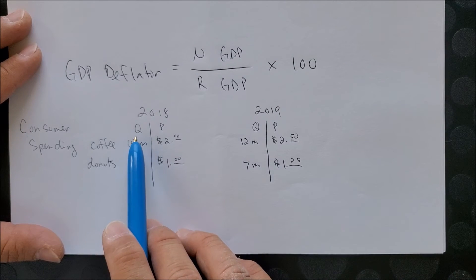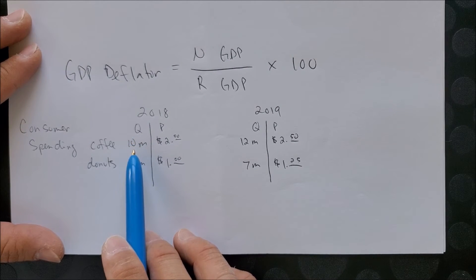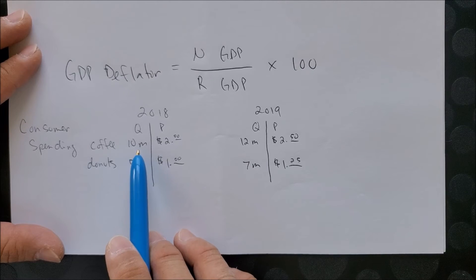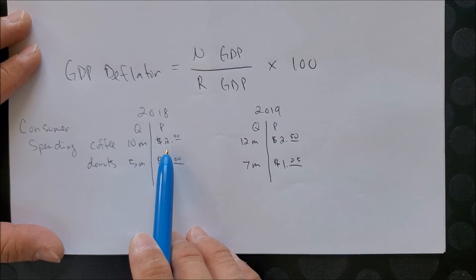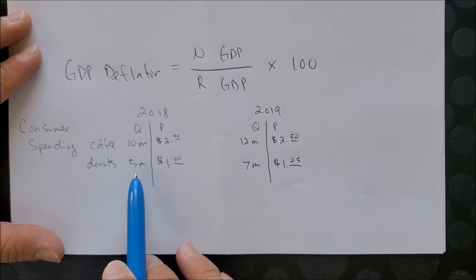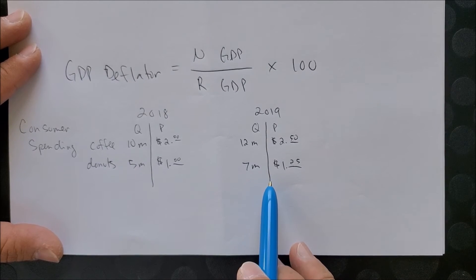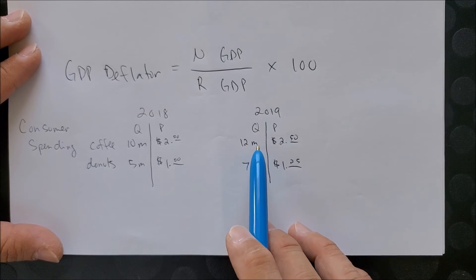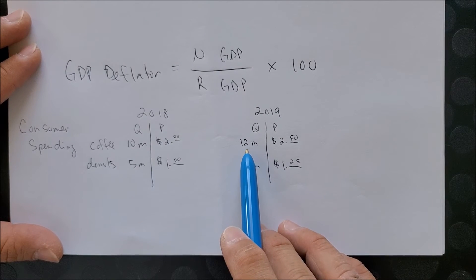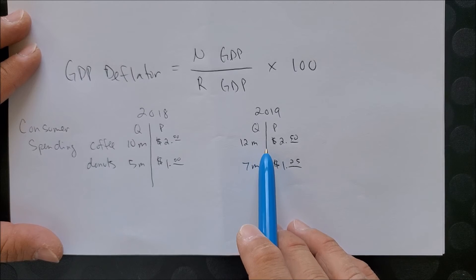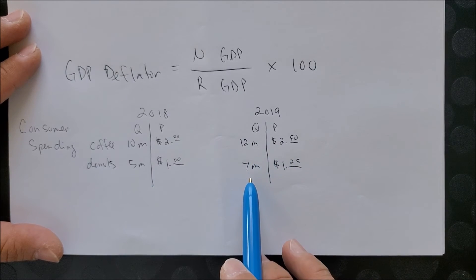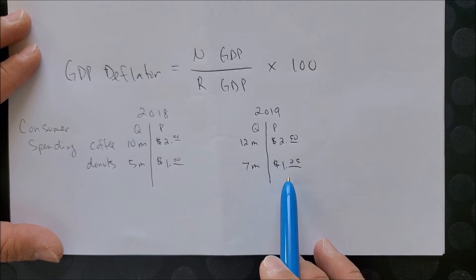Here we have 2018, the quantity of coffee consumed: 10 million cups at a price of $2 per cup and 5 million doughnuts at a price of $1. Next year, 2019, we have information about 12 million cups of coffee at a price of $2.50 and 7 million doughnuts at a price of $1.25.